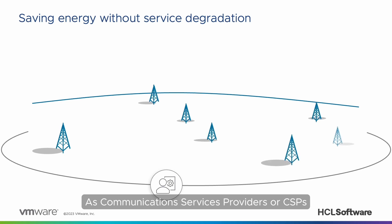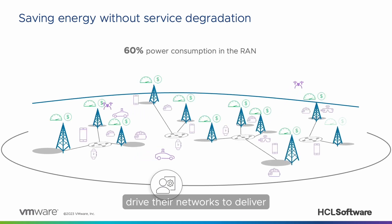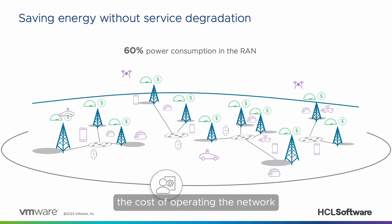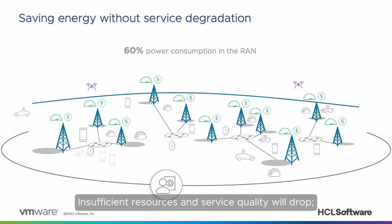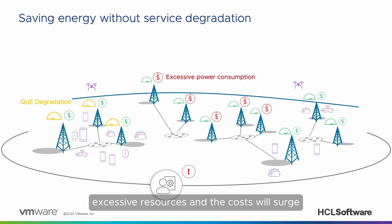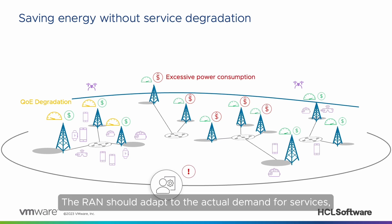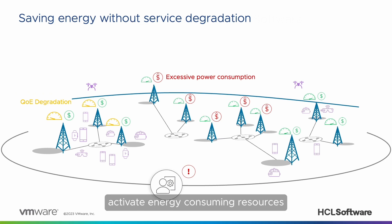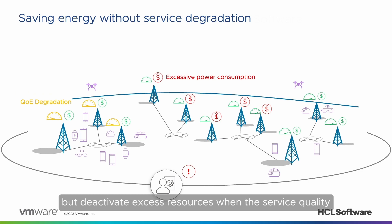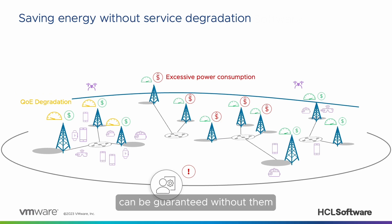As communication services providers, or CSPs, drive their networks to deliver more bandwidth and services, they must still control the cost of operating the network while maintaining service quality. Insufficient resources and service quality will drop. Excessive resources and the costs will surge. The RAN should adapt to the actual demand for services — activate energy-consuming resources, specifically cells, when needed, but deactivate excess resources when service quality can be guaranteed without them.